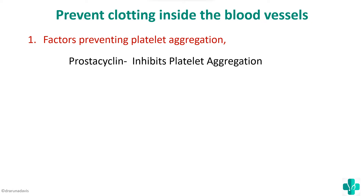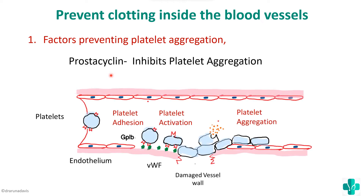An important factor that prevents platelet aggregation is prostacyclin. In the initial temporary hemostasis, platelet plug formation involves platelet aggregation, which is driven by the release of thromboxane and ADP by platelets. Prostacyclin inhibits thromboxane so that platelet aggregation is inhibited.